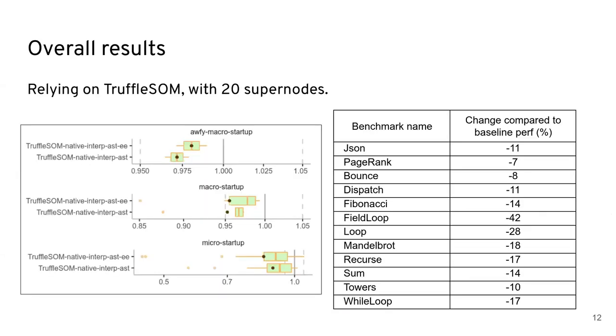So overall, with 20 super nodes, we get these initial results, around 11% on JSON, 7% on page rank, up to 42% on field loop, as we've seen. It should be mentioned that we were looking for easy wins for this early stage, such as trying to implement super nodes that yield good performance with minimal effort, ideally in several benchmarks.